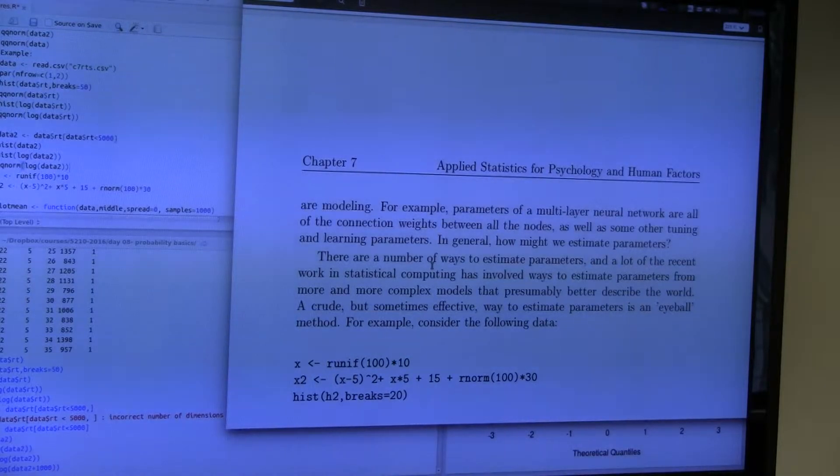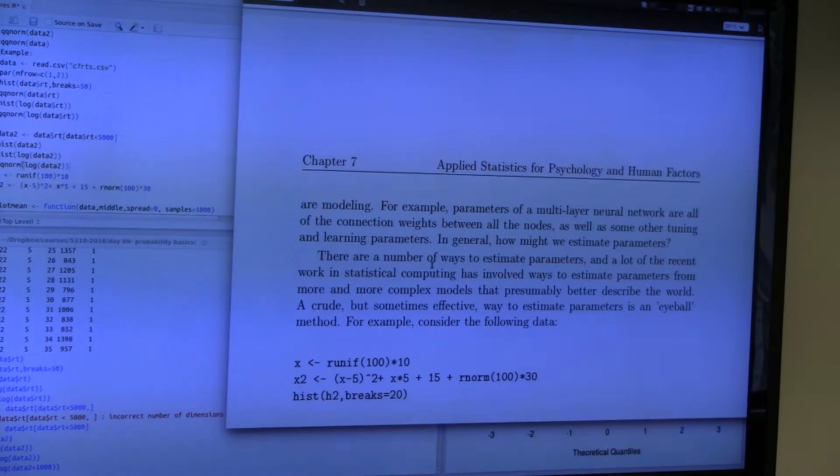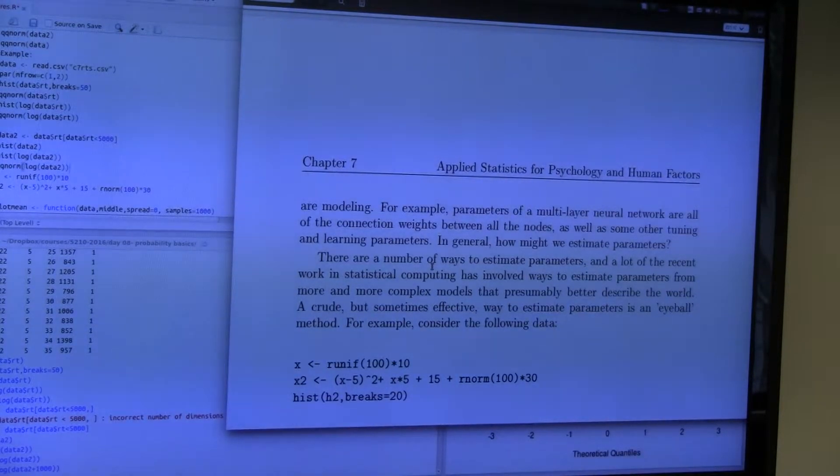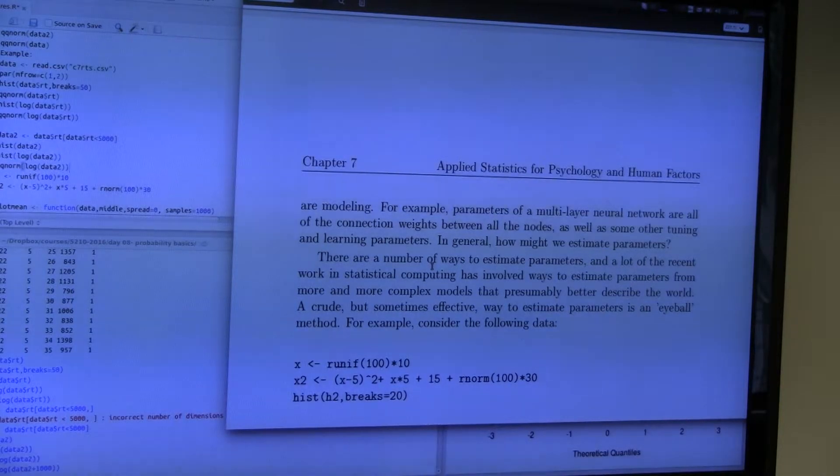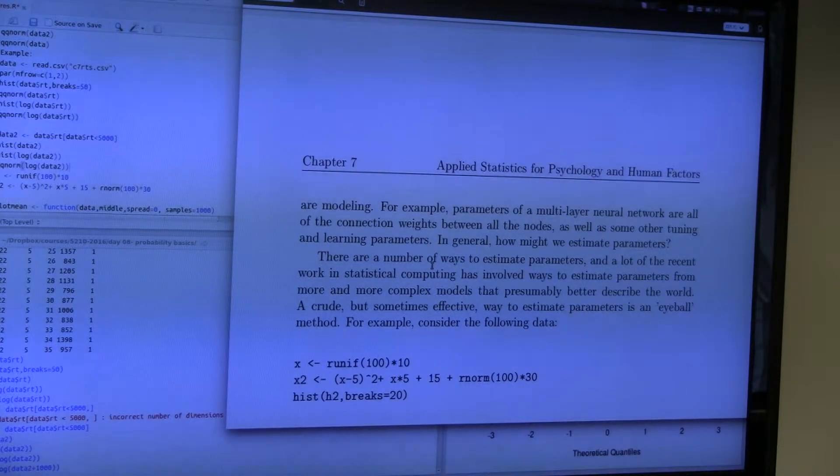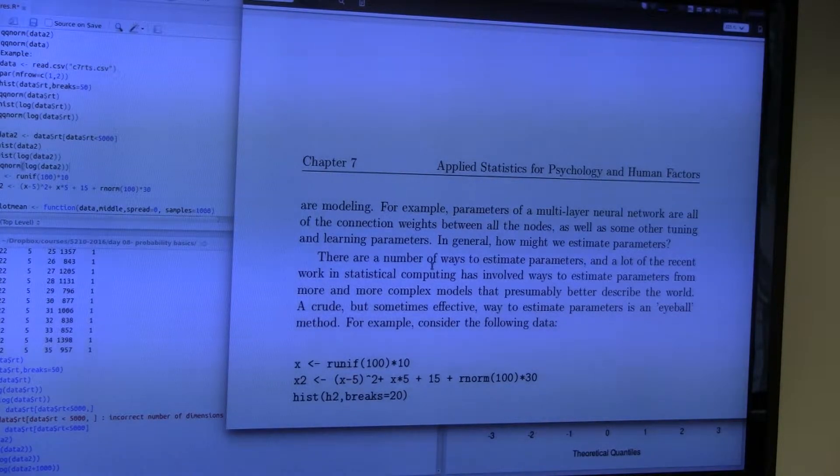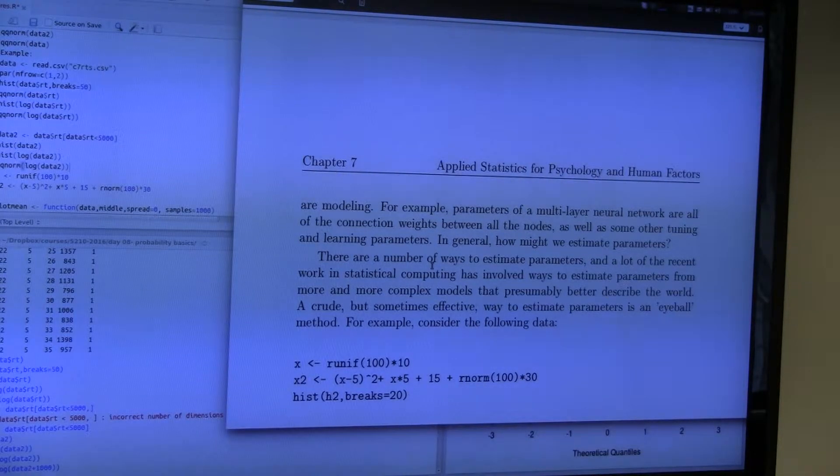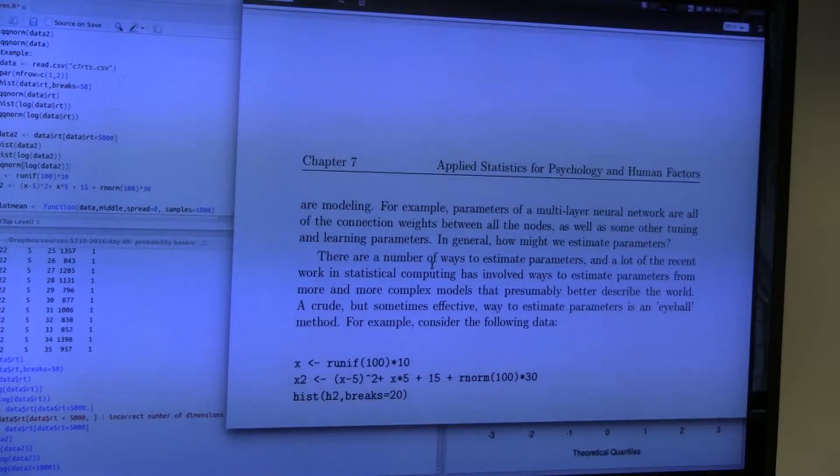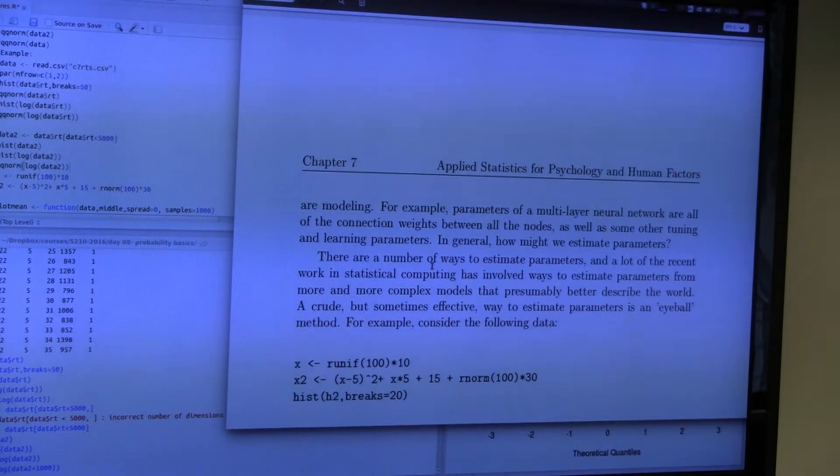But how do we do that? We've got things we've observed, and then we say, well, I think it came from a model like this. How do we go from our data to the model? That's what parameter estimation is, because for any distribution that's interesting, it's going to have a parameter, or one or more parameters, that we try to figure out: what is the most likely, or best, or most robust value or values of that parameter that could have generated the data I observed.